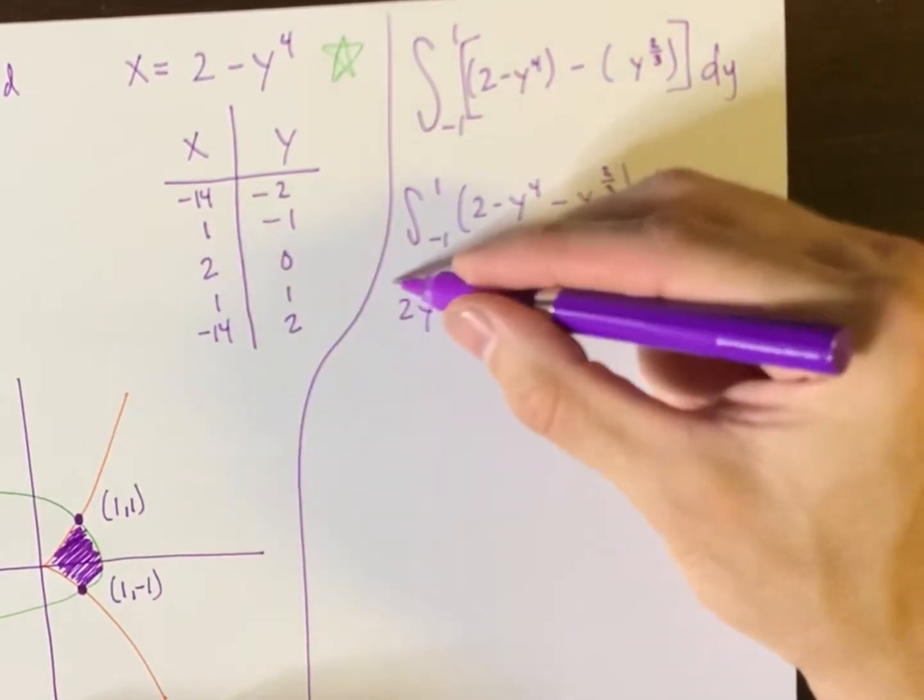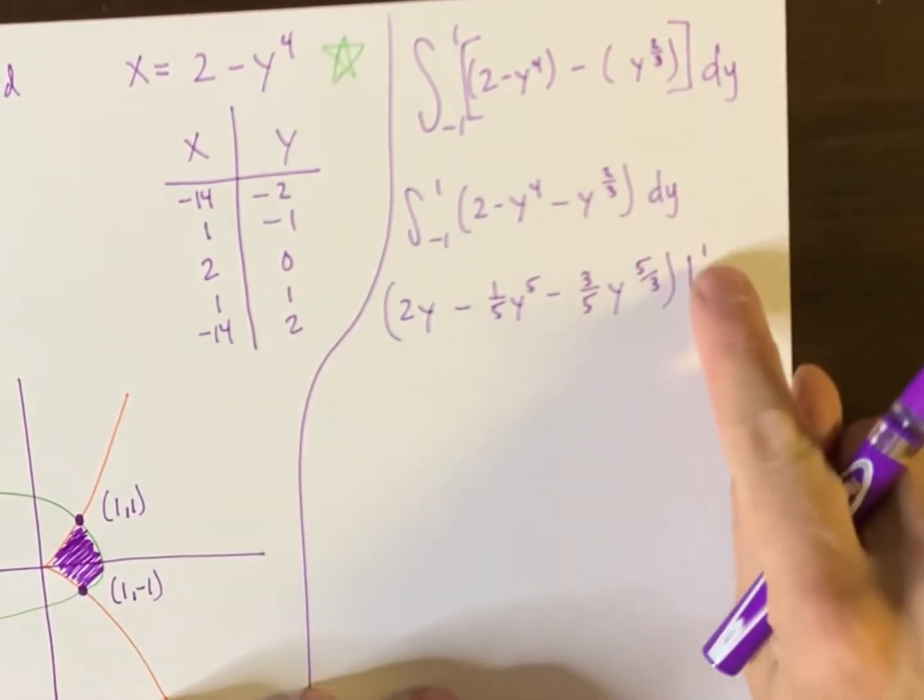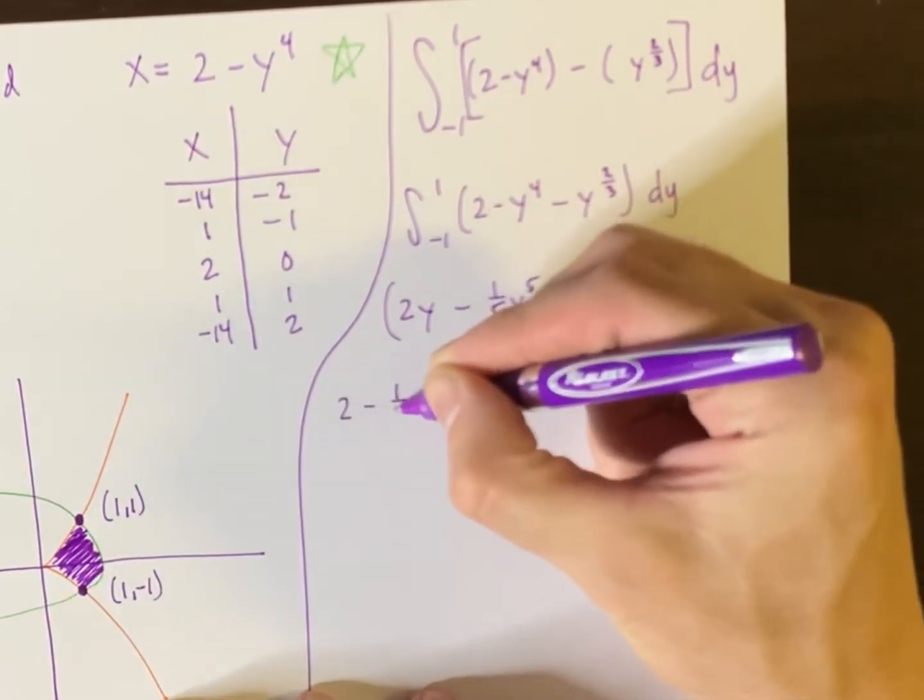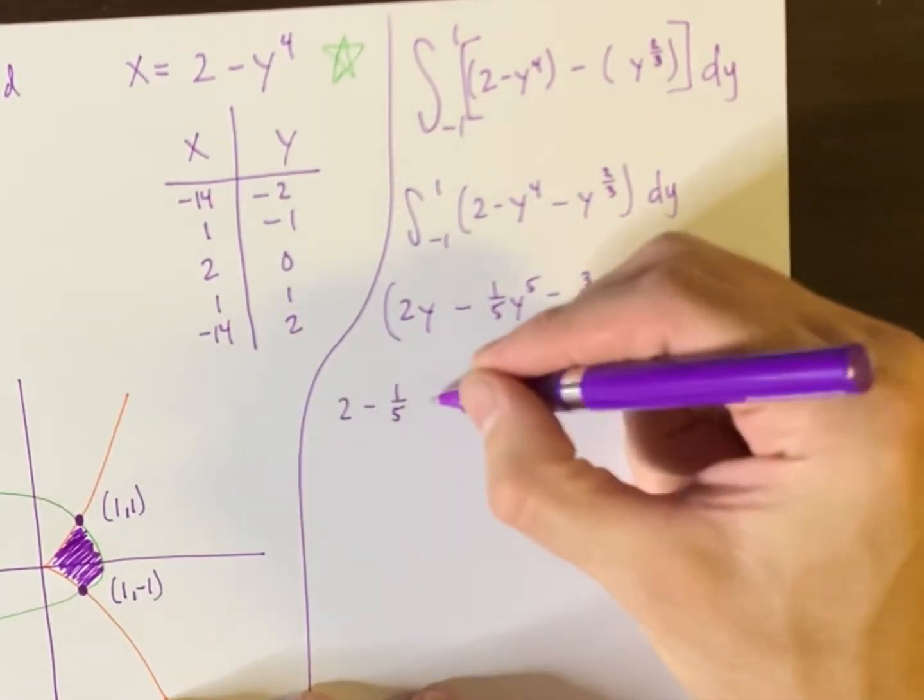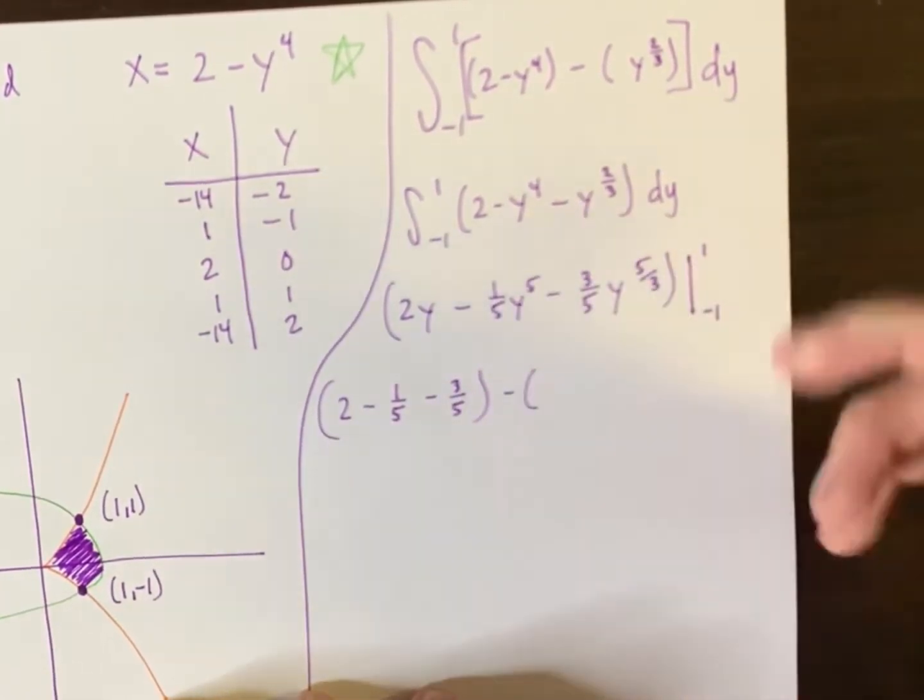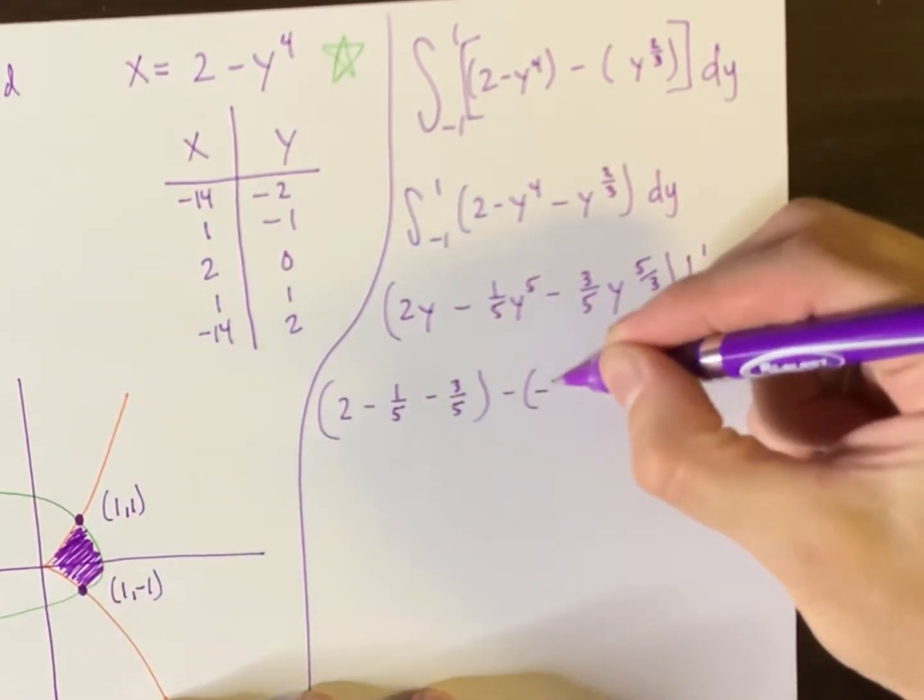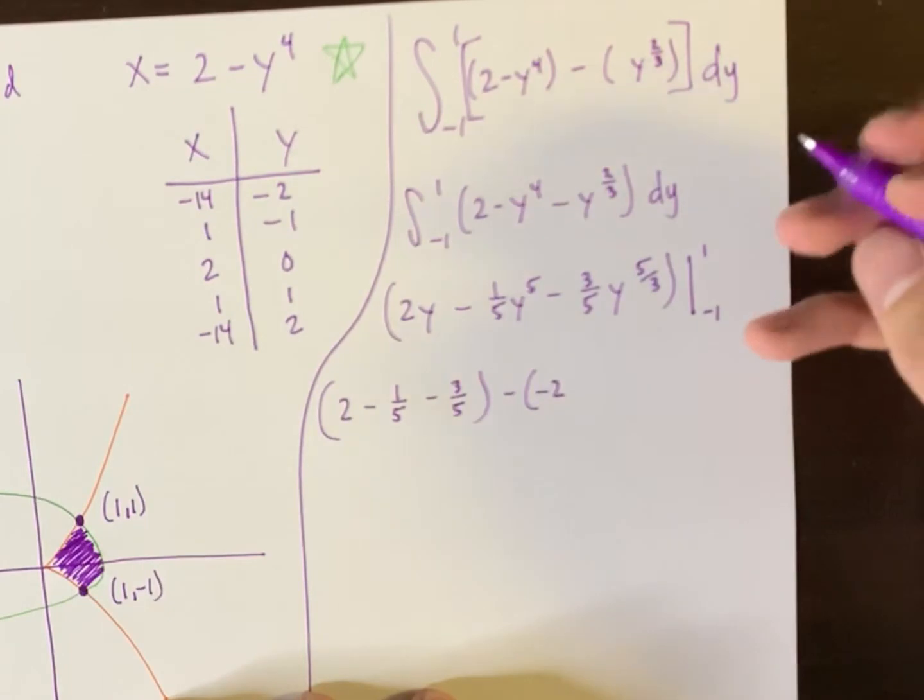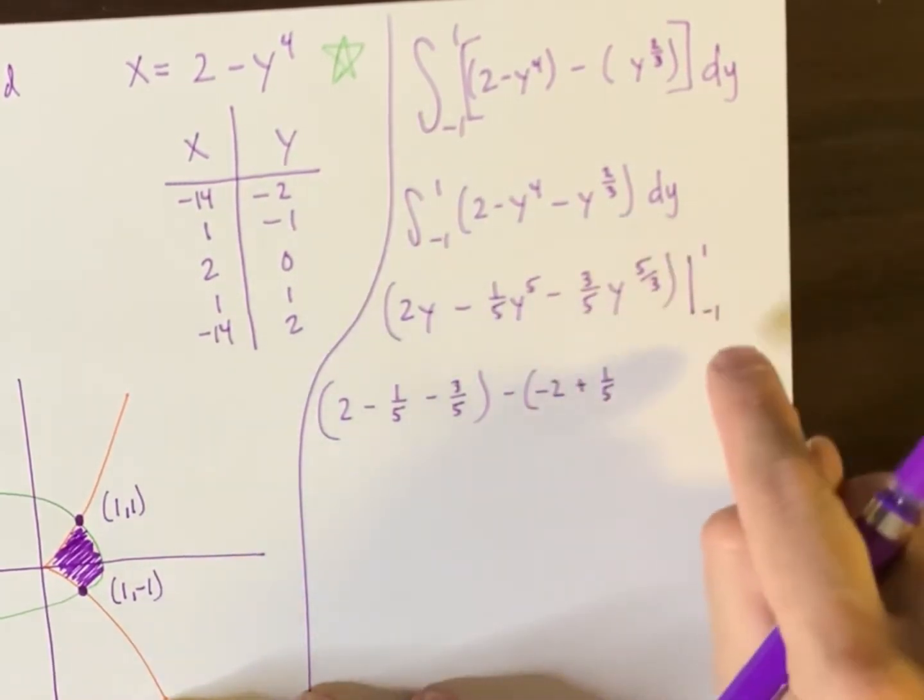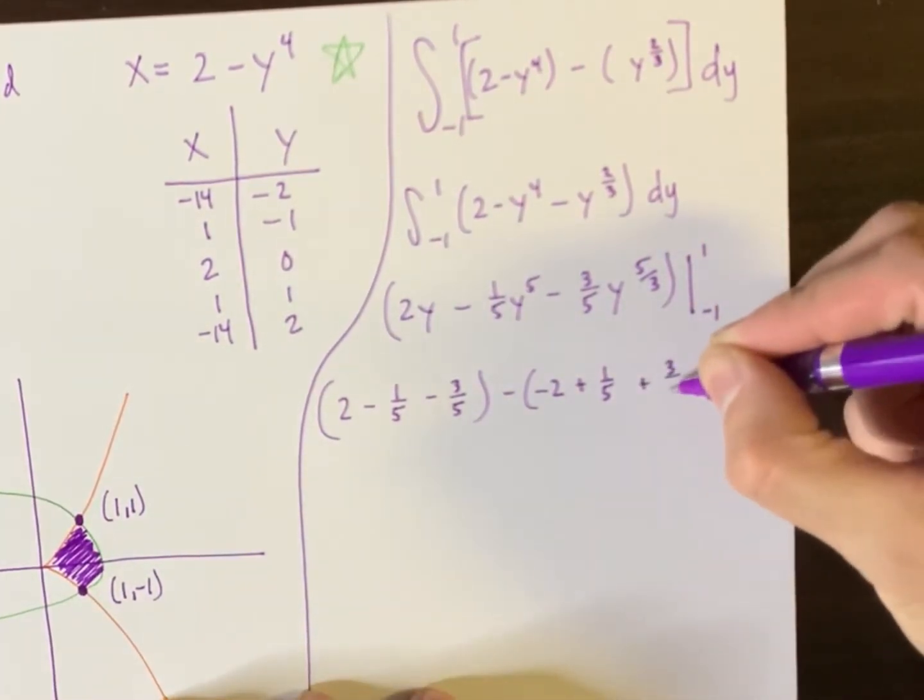And all of this is to be evaluated from negative one to one. So if I plug in one here, here and here, I would get two minus one fifth minus three fifths. Put that in parentheses. Put that in parentheses. Take away. And now input negative one there, there and there. And that would be negative two. And that would be positive one over five. There and there. And then plug that in here. That would be positive three over five.